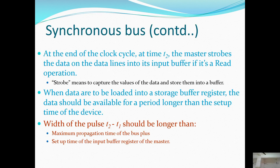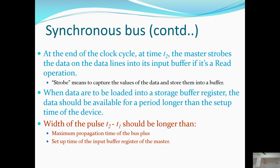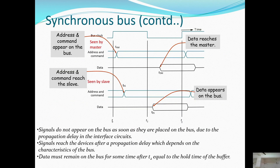At the end of the clock cycle at time T2, the master strobes the data on the data lines into its input buffer during a read operation. Strobing means capturing the values of the data and storing them into a buffer register. The data should be available for a period longer than the setup time of the device. The pulse width T2 minus T1 should be longer than the maximum propagation time of the bus plus the setup time of the input buffer register of the master.